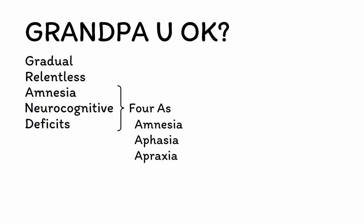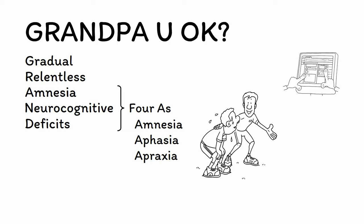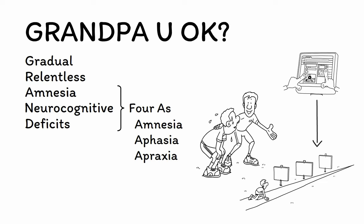The next A is for apraxia, or an inability to execute voluntary motor skills. In early stages of the disease, it is typically more complex tasks — like typing on a computer or driving a car — that are affected. However, as the disease progresses, even more simple tasks like walking and eating can be impaired. Apraxia puts patients at high risk of falls and other injuries, especially in advanced stages of the disease, which is a major cause of disability and even death in this population.